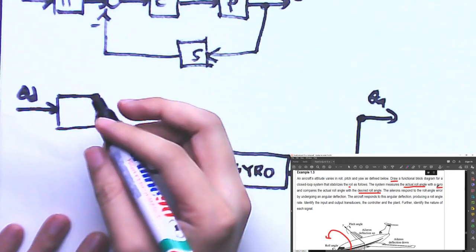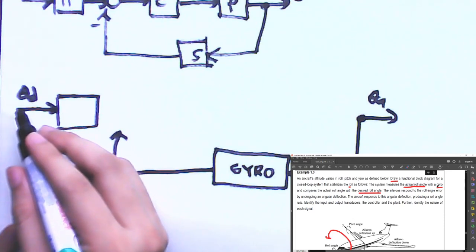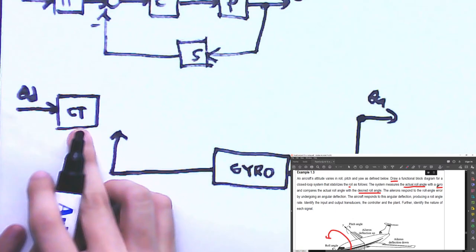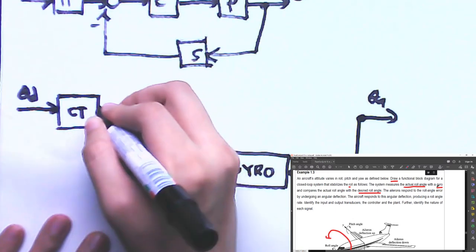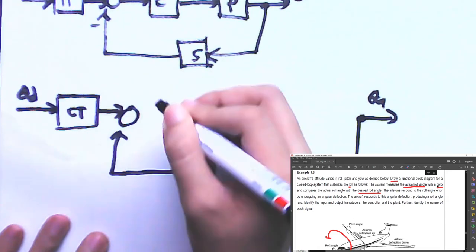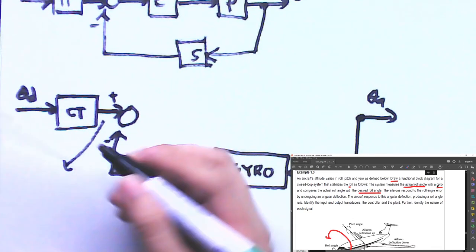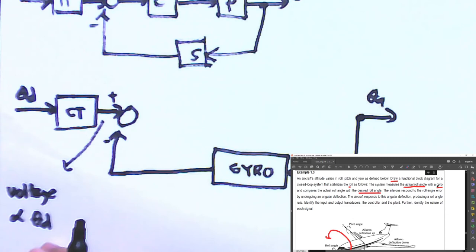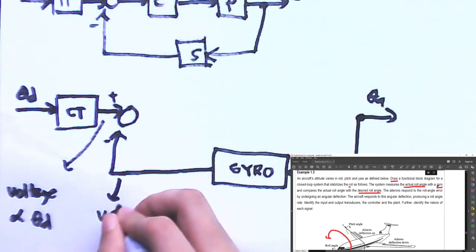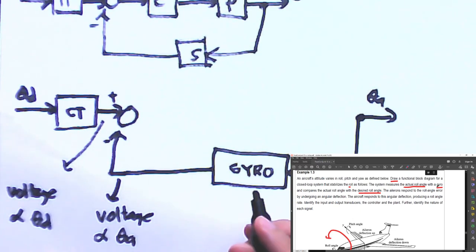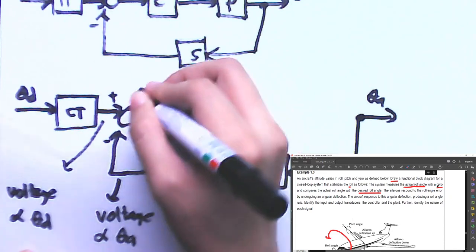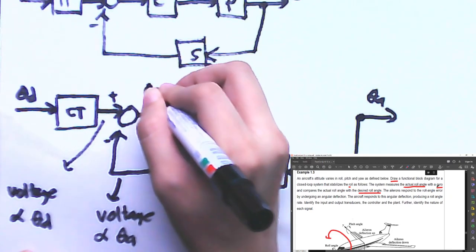The input transducer is the pilot's controls. This produces a voltage proportional to the desired roll angle. That signal is compared — positive and negative — with the voltage from the gyro proportional to the actual roll angle. The resulting difference is the roll angle error, θ_e.